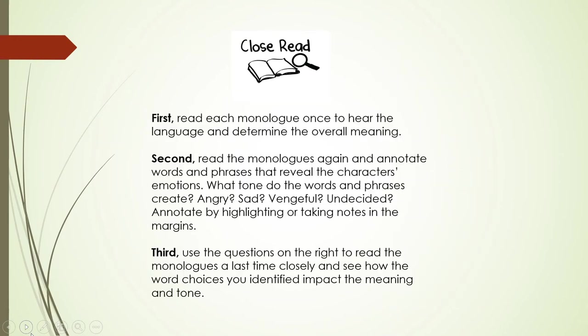When we do a close read of a piece of text, we are looking deeply into its meaning, which requires more than reading the text once. First, we will read each monologue once to hear the language and determine the overall meaning. Second, we will read the monologues again and annotate words and phrases that reveal the character's emotions. What tone do the words and phrases create — angry, sad, vengeful, undecided? Annotate by highlighting or taking notes in the margins. Third, we will use the questions on the right to read the monologues a last time closely and see how the word choices impact the meaning and tone.